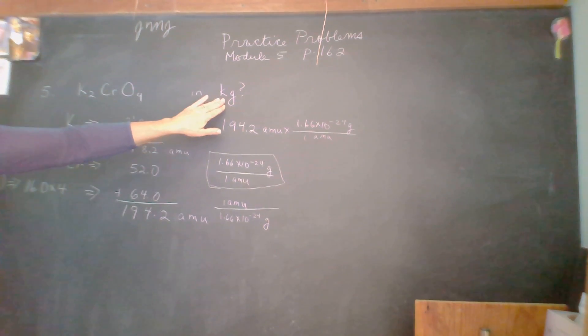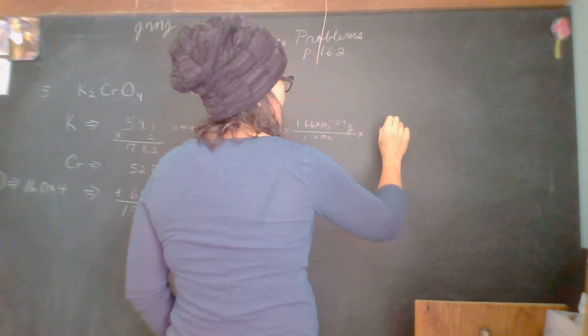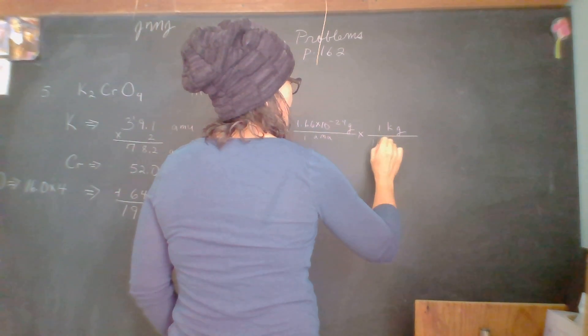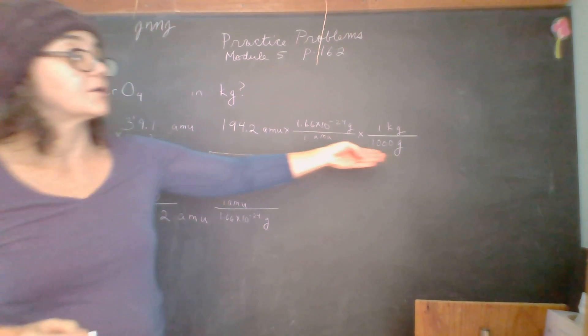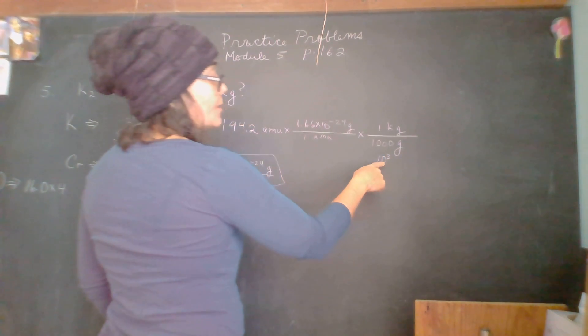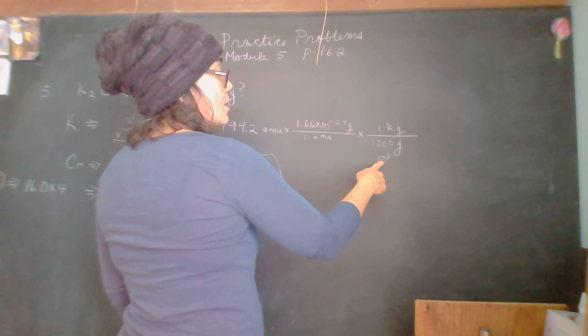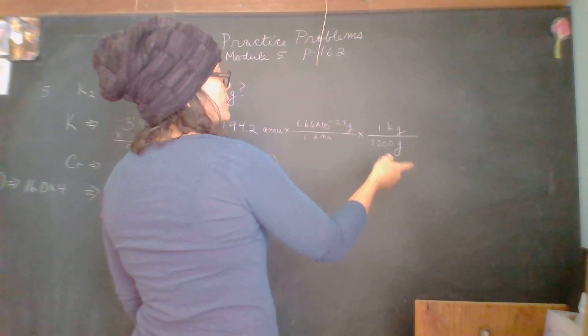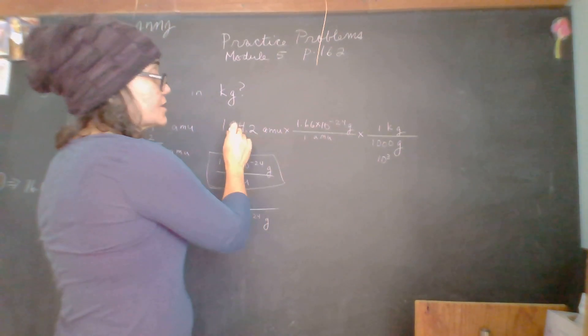We'll multiply it 1.66 times 10 to negative 24th grams per 1 AMU. Now, but we're not done. We still want to get kilograms. So we're going to multiply it. We haven't done the answer yet, though. Well, let's do the kilograms. Let's set it all up. In order to get kilograms, it's going to be 1 kilogram per 1,000 grams. Or we could go like 1.66 times 10 to the negative 27. But that's not what it will be. We're going to worry about that in a minute, but let's just start here.